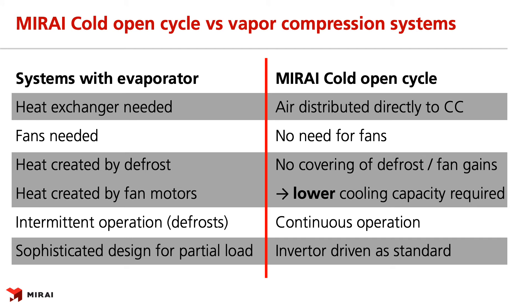Here is a basic comparison of vapor compression systems with Mirai Cold open cycle. Systems with an evaporator: a heat exchanger is needed, fans are needed, heat created by defrost and fan motors has to be covered by additional energy, there is intermittent operation caused by defrosts, and sophisticated design is usually required for partial load operation. Mirai Cold open cycle: air is distributed directly to the cold chamber with no need for additional fans, there is no need to cover defrost or fan gains — therefore lower cooling capacity is required — there is continuous operation, and an inverter drive comes as standard.